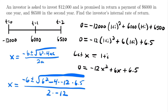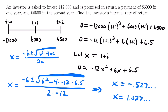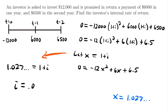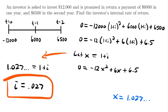Plugging this into your calculator, you will get two different values for x: x equals negative 0.527 and x equals 1.027. Remember, we are not going to use the negative value of x — we want the positive value. So using x equals 1.027 and substituting back into x equals 1 plus i, we have 1.027 equals 1 plus i. Subtracting 1 from both sides, we find that i equals 0.027. That will be the investor's internal rate of return in this scenario.